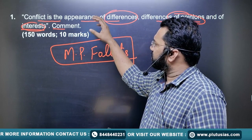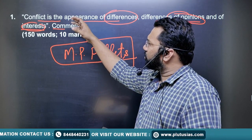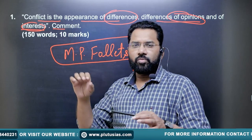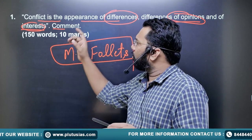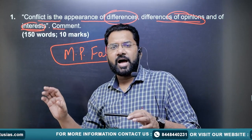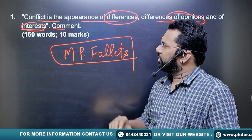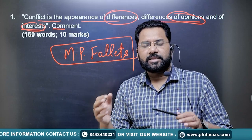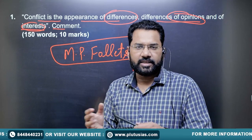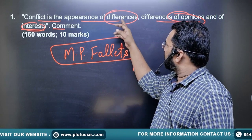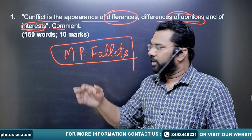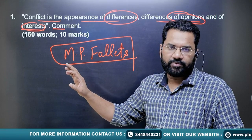So based on this, if we are talking about the demand of this question, first of all one should talk about how conflicts are arising. Once you set the background about how exactly conflicts are arising — because of differences of opinion and interest — then you will be talking about Mary Parker Follett.